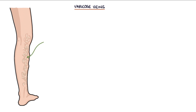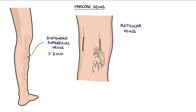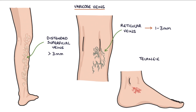Varicose veins are distended superficial veins measuring more than 3 mm in diameter, usually affecting the legs. Reticular veins are dilated blood vessels in the skin measuring 1 to 3 mm in diameter. Telangiectasia refers to dilated blood vessels in the skin measuring less than 1 mm in diameter, also known as spider veins or thread veins.